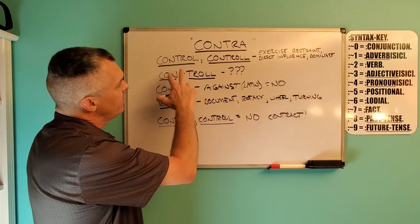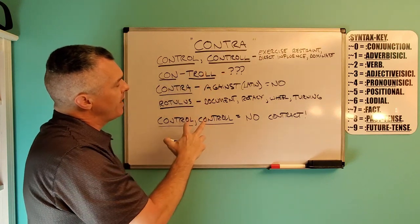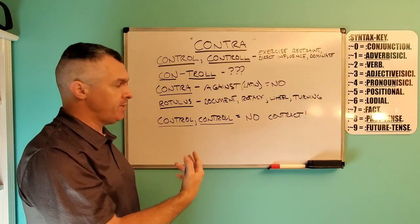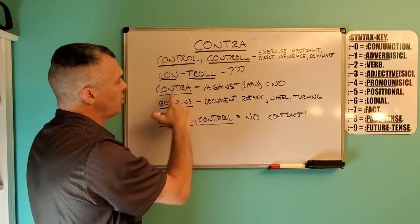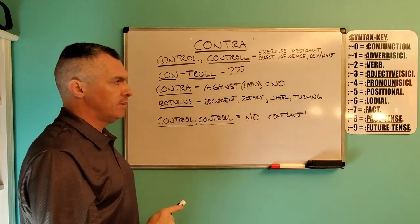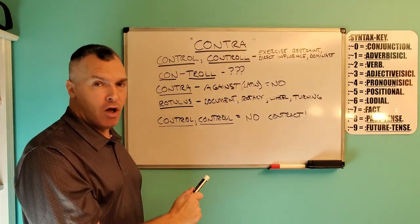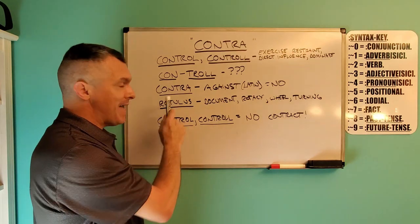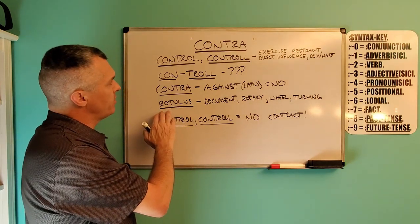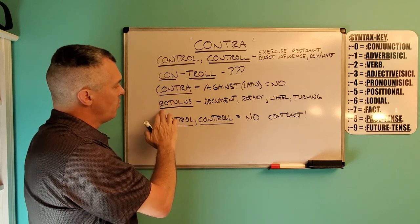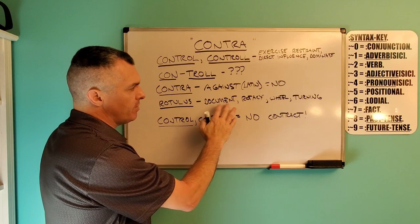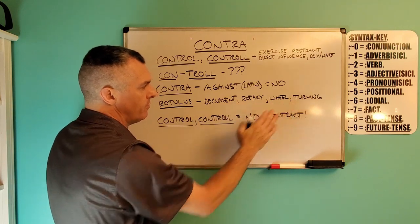But when you take the word and look at the actual etymology of it and its nativity roots, it comes from 'contra,' which means 'against,' which means 'no' — Latin contra. And then the next part of the word 'control' is 'rotulis,' which is also from Latin, which means document, rotary, wheel, turning.